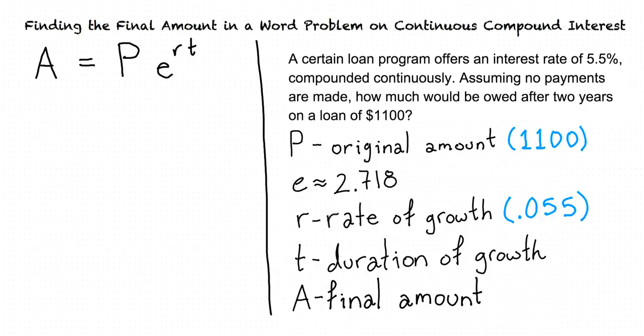T is the duration of time over which the loan grows. The problem says that the loan is growing for two years, so I think T equals 2. Right. And A represents the final amount, which is what we're trying to find. Now that we know the rest of these values, we can plug those into our equation and solve for A.